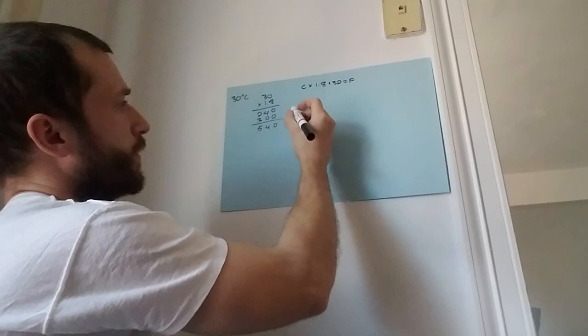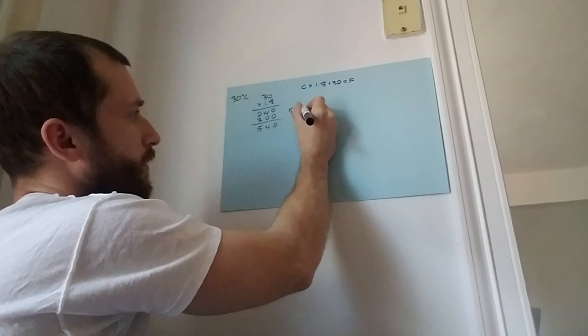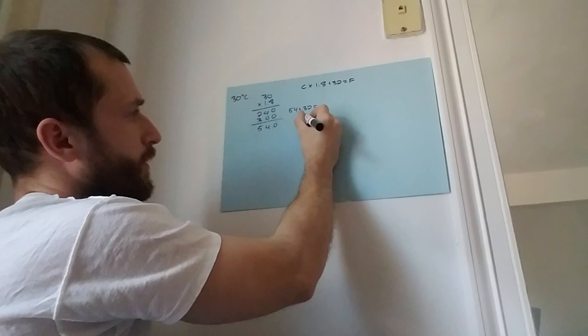And the second step: 54 plus 32. This is gonna give you 86 degrees Fahrenheit. It's as simple as that.